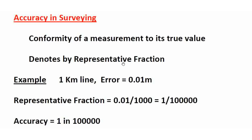Accuracy is denoted by the representative fraction. For example, consider a 1 km line where the error is measured as 0.01 meter. The error is defined as measured value minus true value. So the error here is 0.01 meter over a 1 km line — that is what we call accuracy.